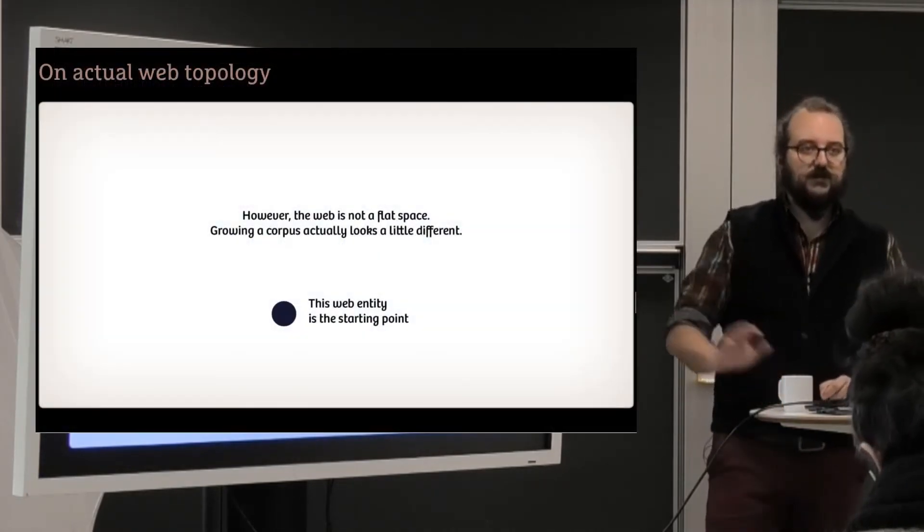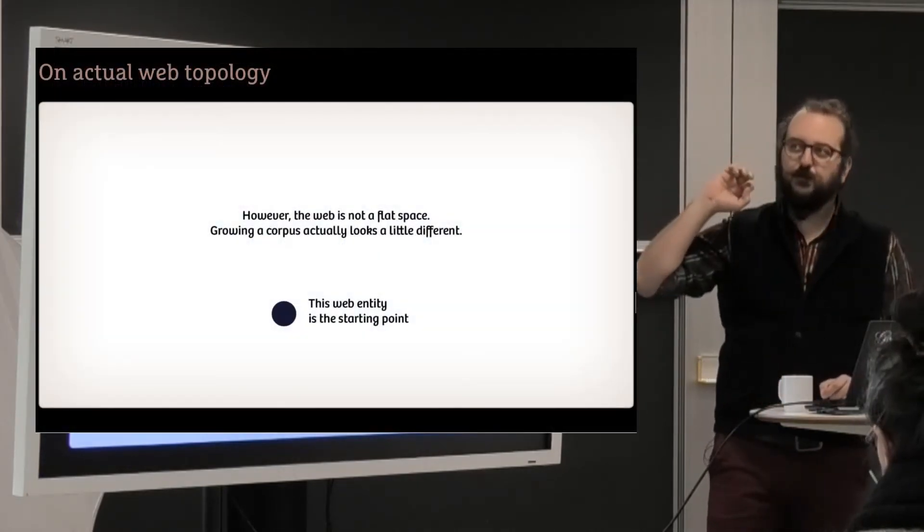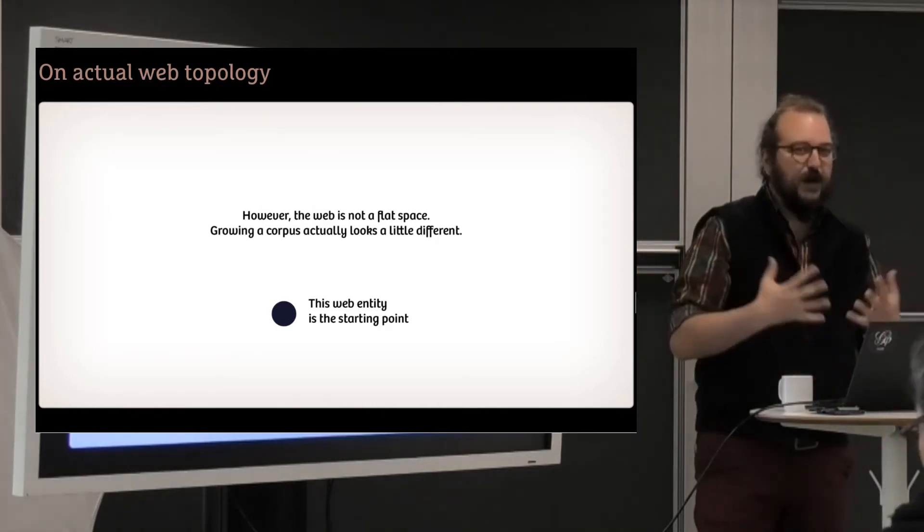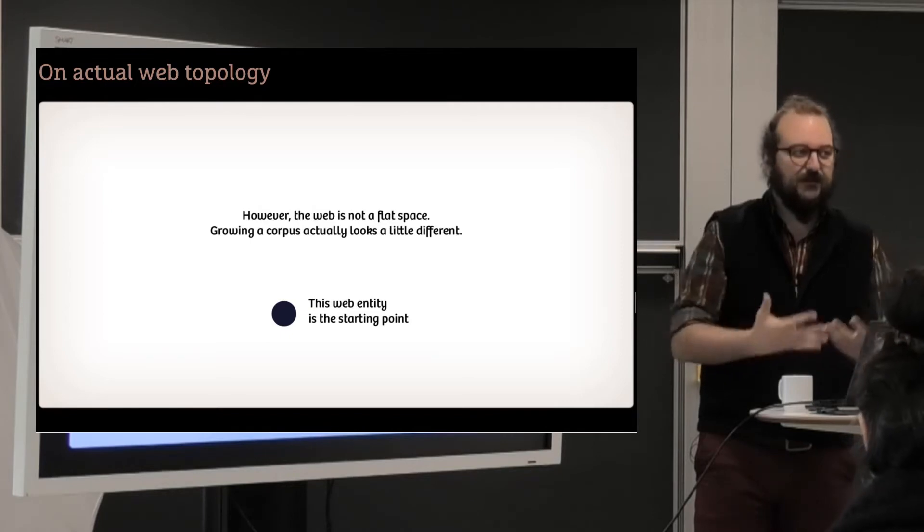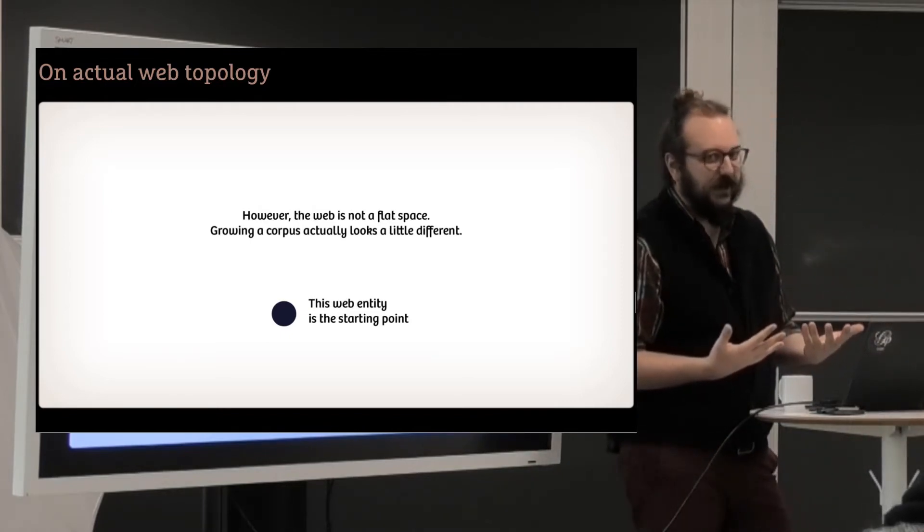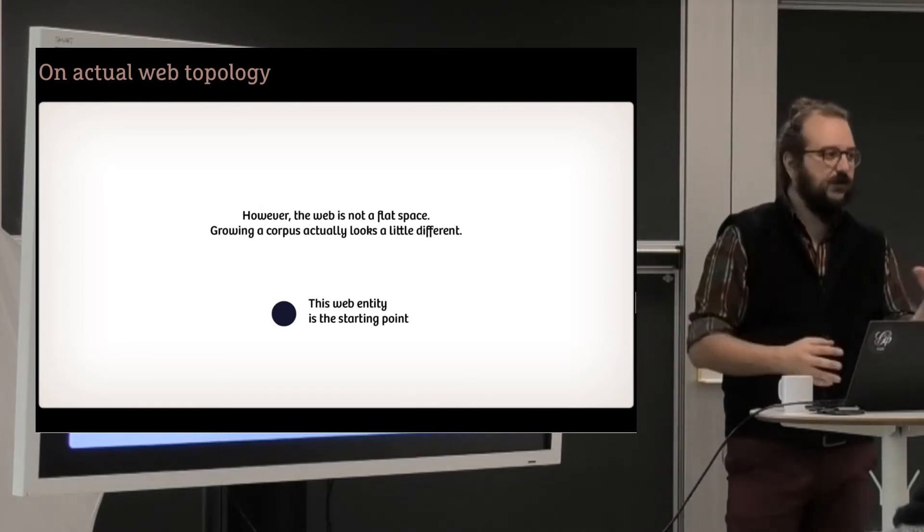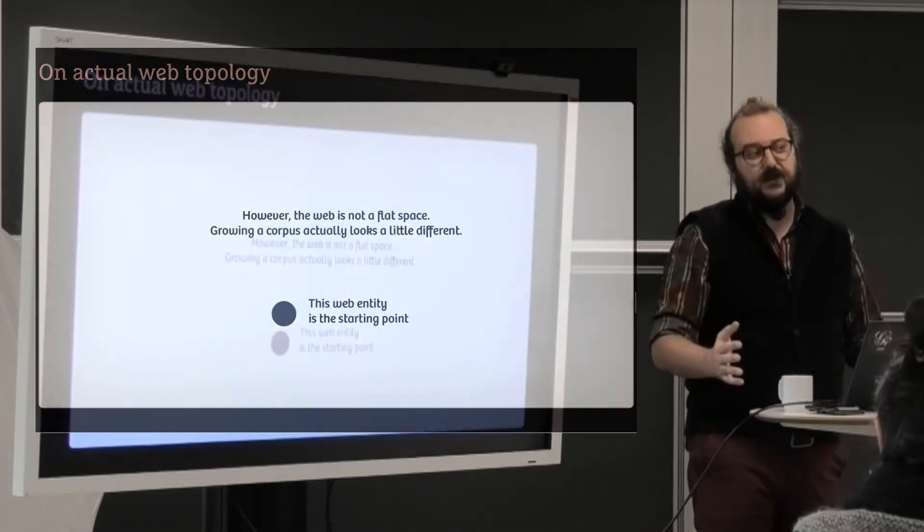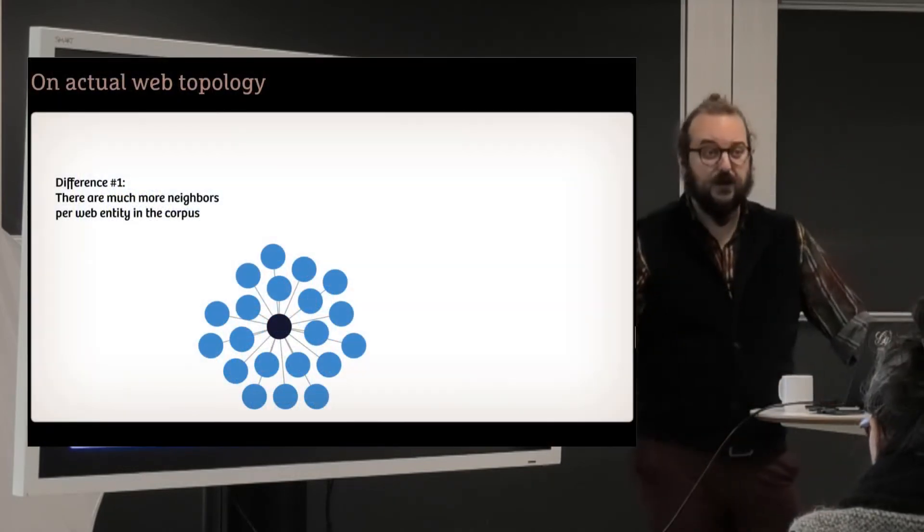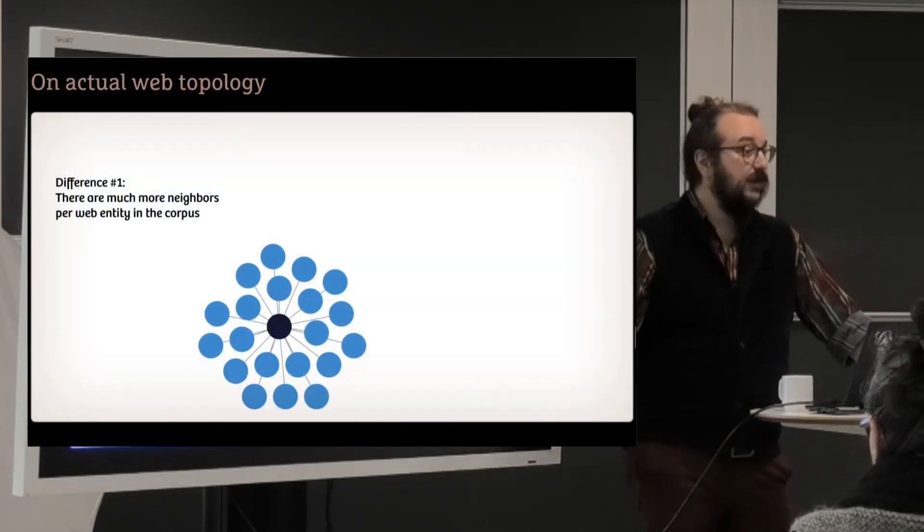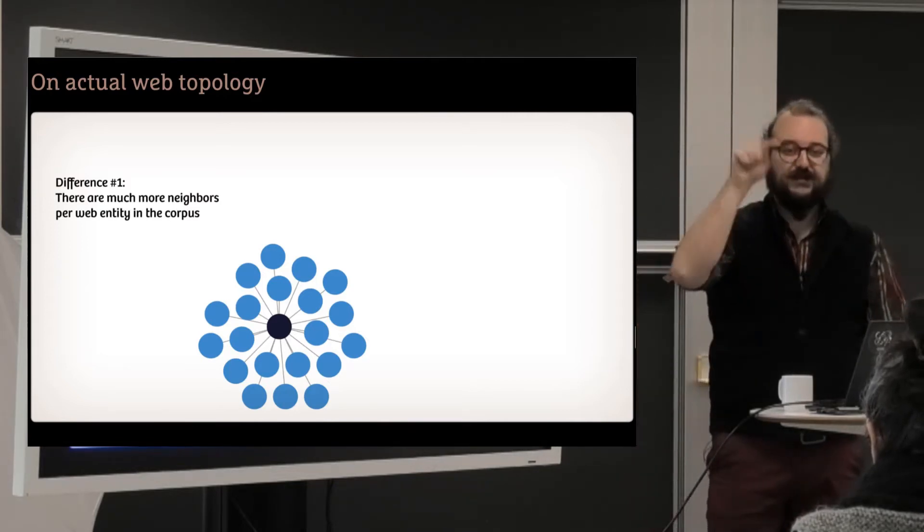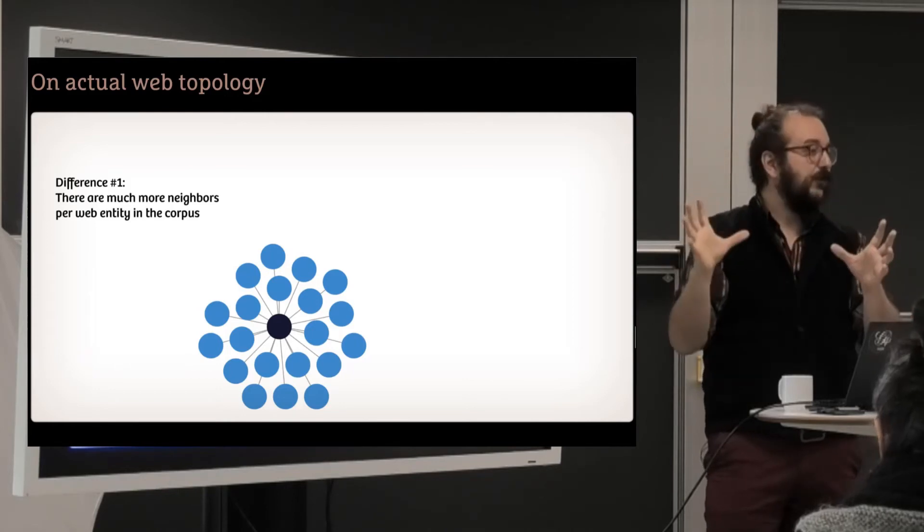I'm almost done with this part, but I just need to tell you that on the web topology, this metaphor doesn't unfold as it looks like. You do have the IN, the OUT, the DISCOVERED. It works like I said, but the space is not the same. First of all, you have much more neighbors than in a flat space. In my previous example, each cell had six cells around, but on the web, it's more like 10, 100, 1,000 or more sometimes.